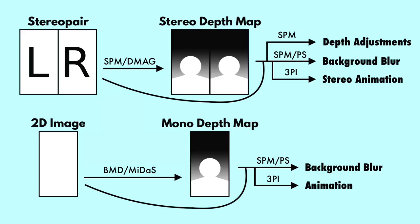Those are two applications of a mono depth map. However, if we want to go beyond mono into stereo, we can feed the original image plus depth map into Stereo Photo Maker to produce a 3D stereo pair, and thereby have access to everything on the top of this diagram, even starting with a 2D image, thanks to artificial intelligence.